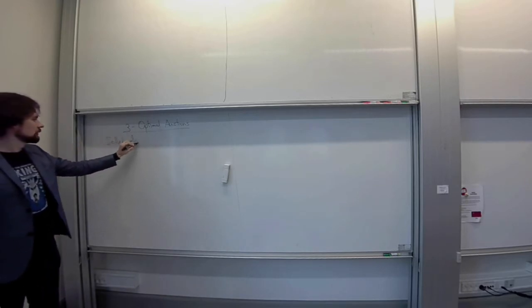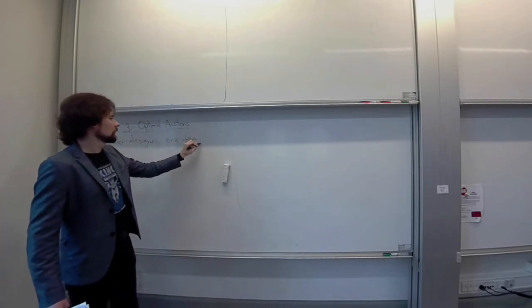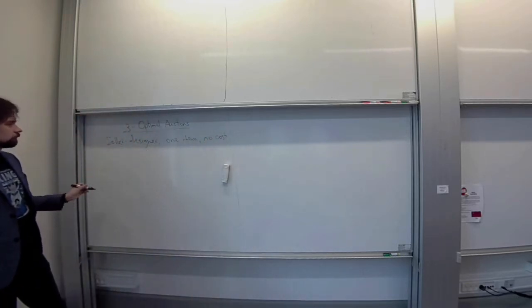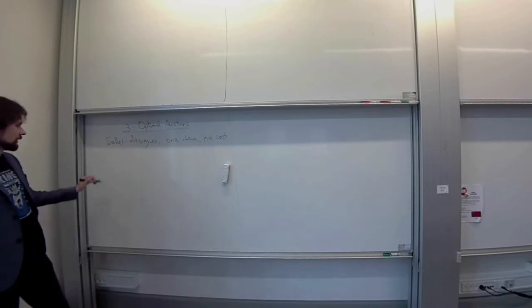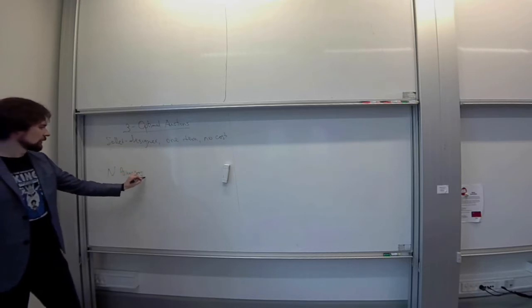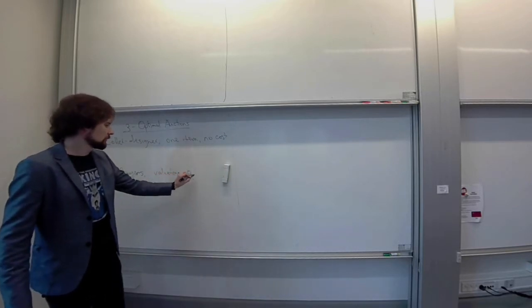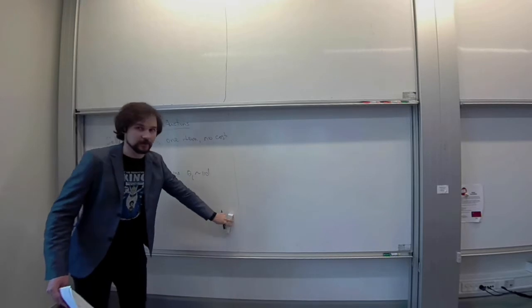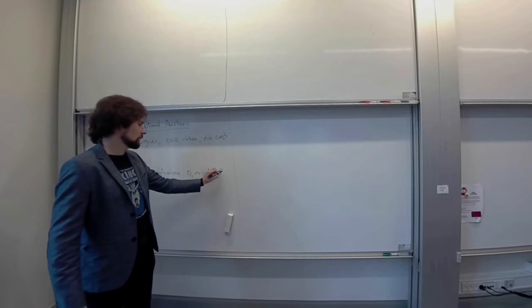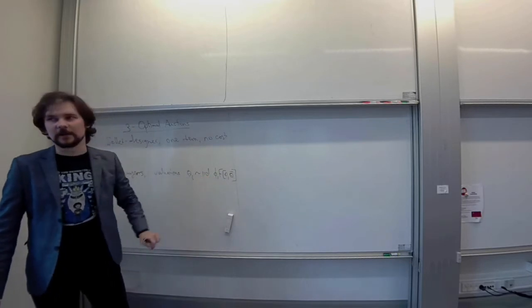But we'll do that. So, seller, designer, one item, no cost. Do I have two buyers, n buyers? N buyers, with valuations theta i, which will be iid. So, again, independently distributed, but identically, with the same distribution with pdf phi and cdf f that we had before.